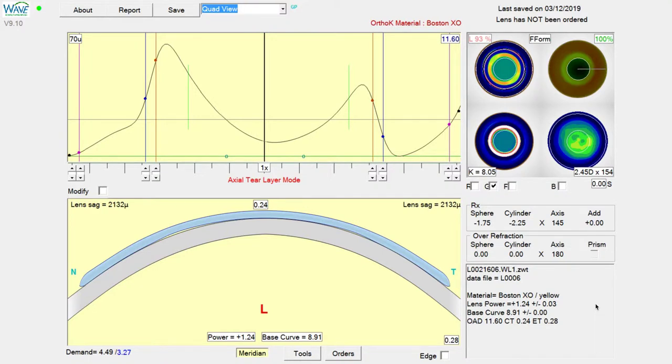In this ortho-K case, the challenge is we've got a refractive cylinder that very closely matches the corneal cylinder, and it's heading towards an oblique axis, especially in the refraction.